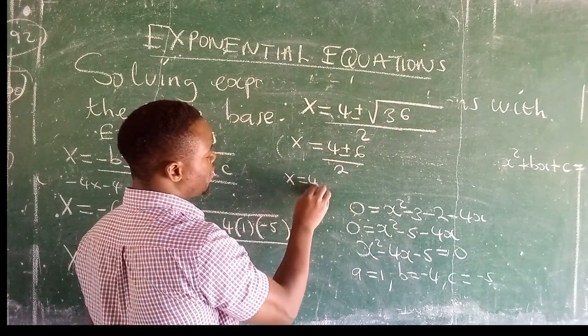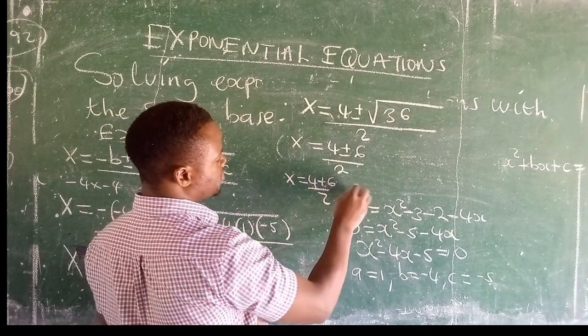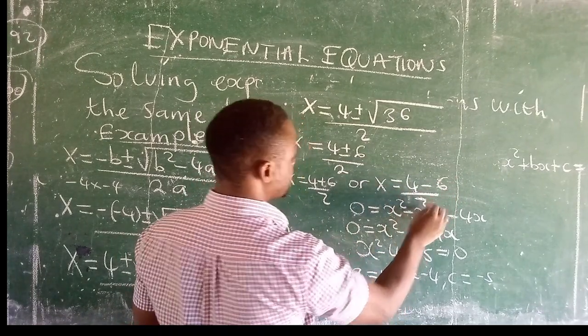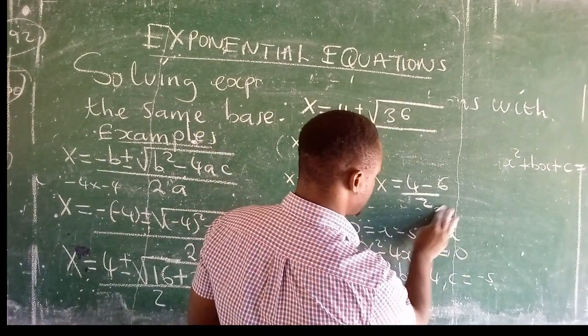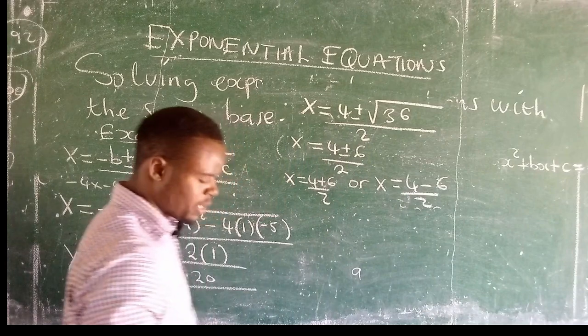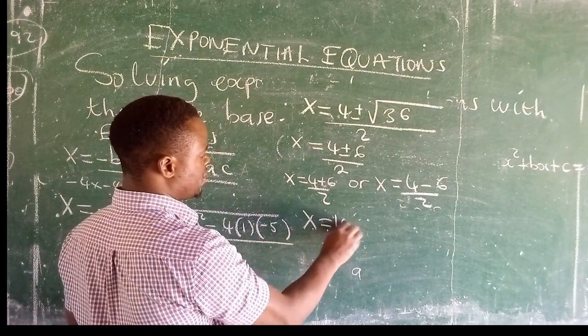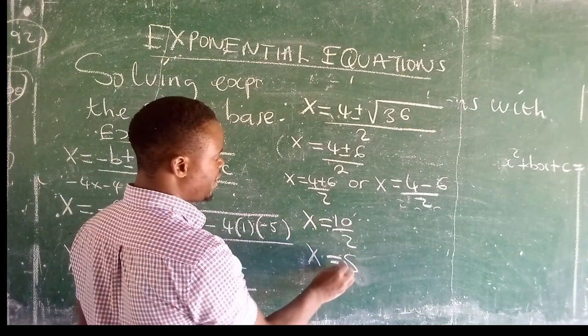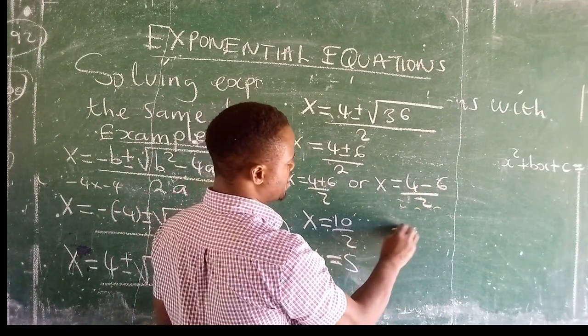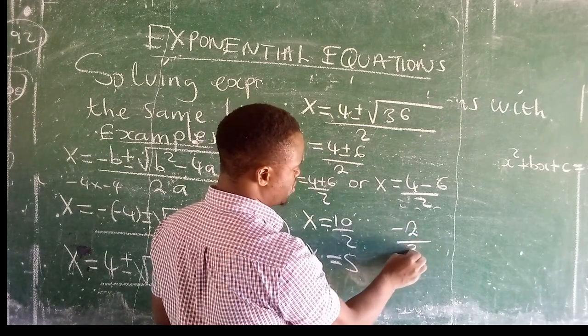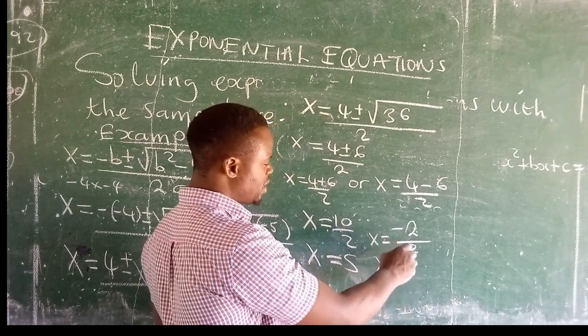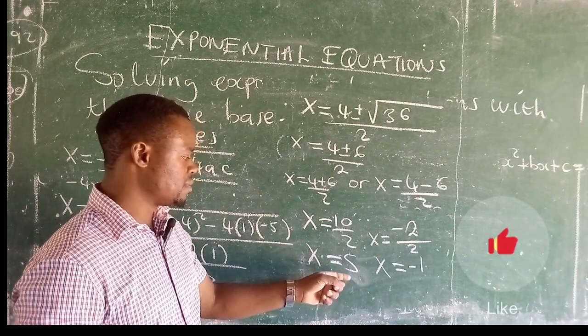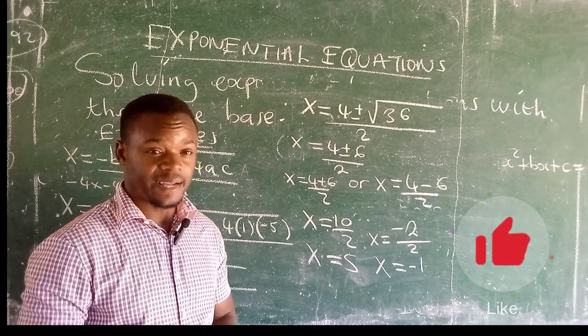So we are going to have x is equal to 4 plus 6 over 2, or x is equal to 4 minus 6 over 2. So we have x which is equal to 10 over 2, x is equal to 5. And 4 minus 6 gives us negative 2 over 2, which equals negative 1. So the roots that solve that quadratic equation are 5 and negative 1.